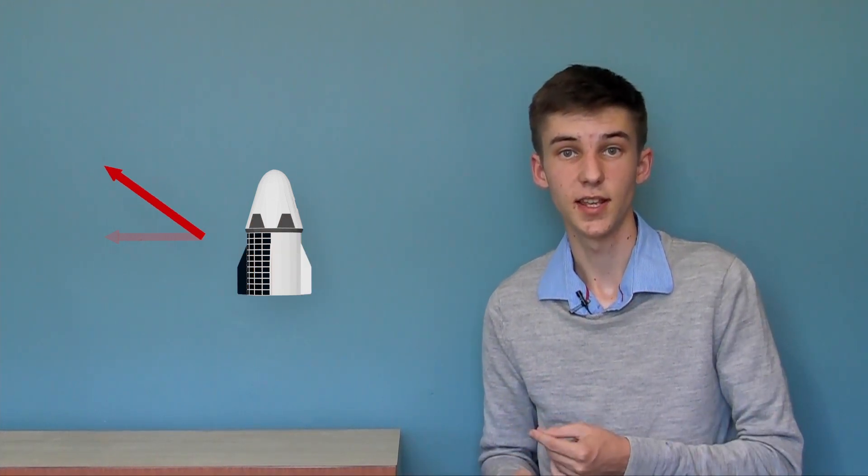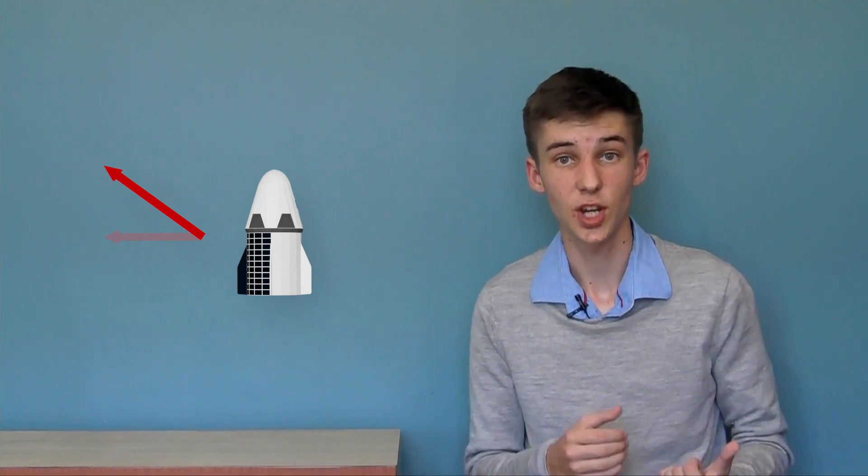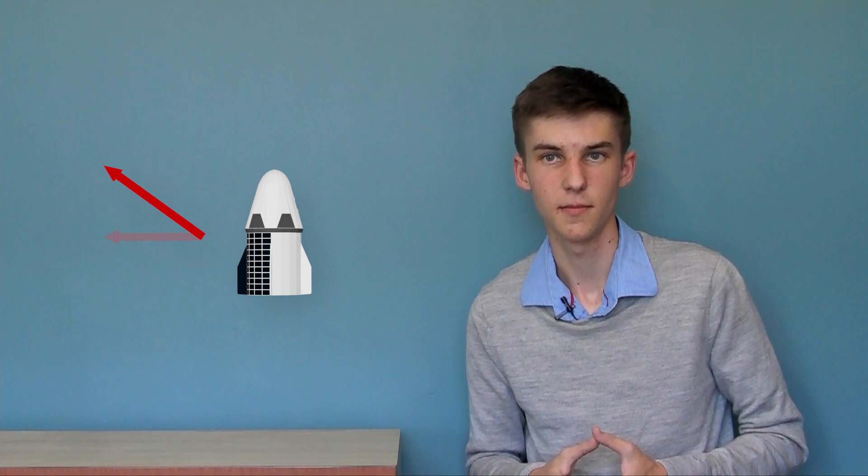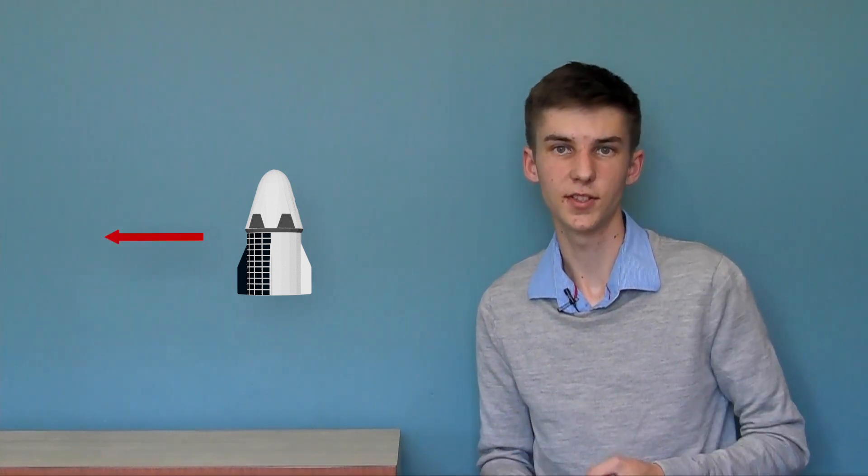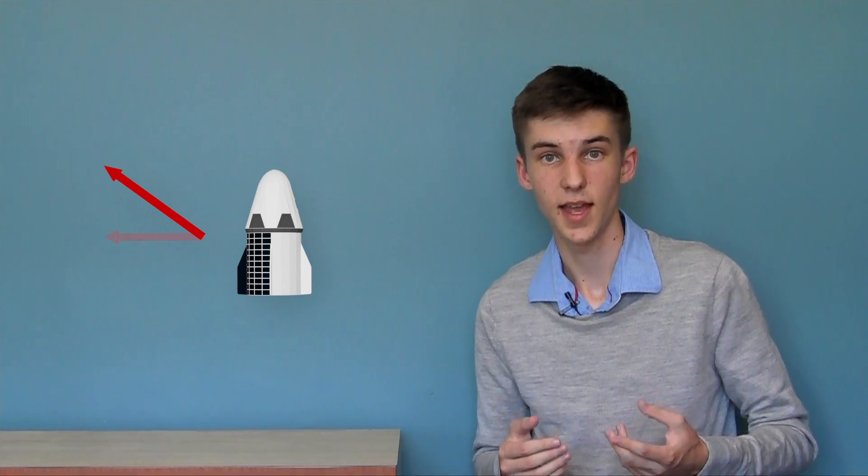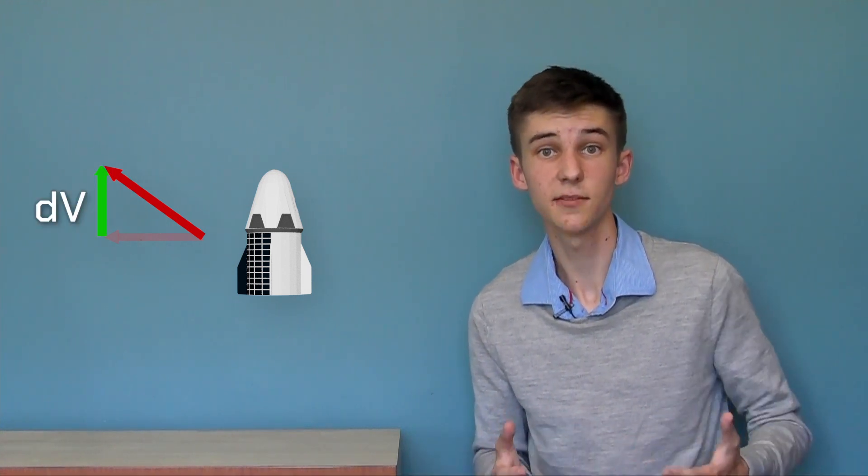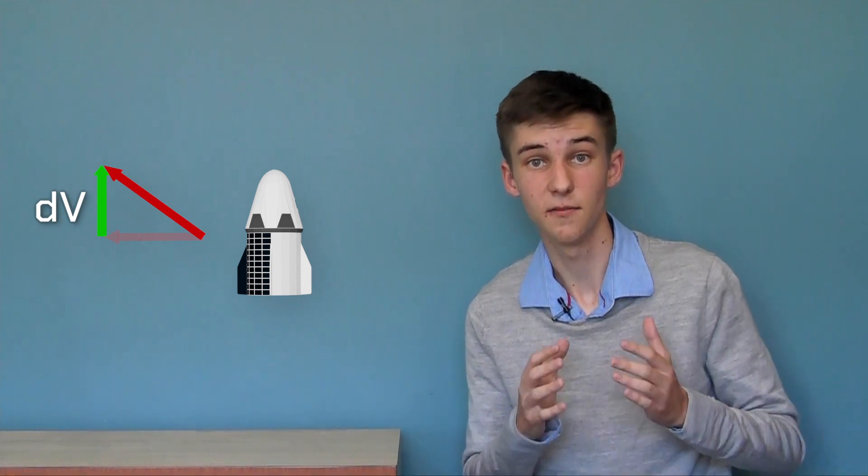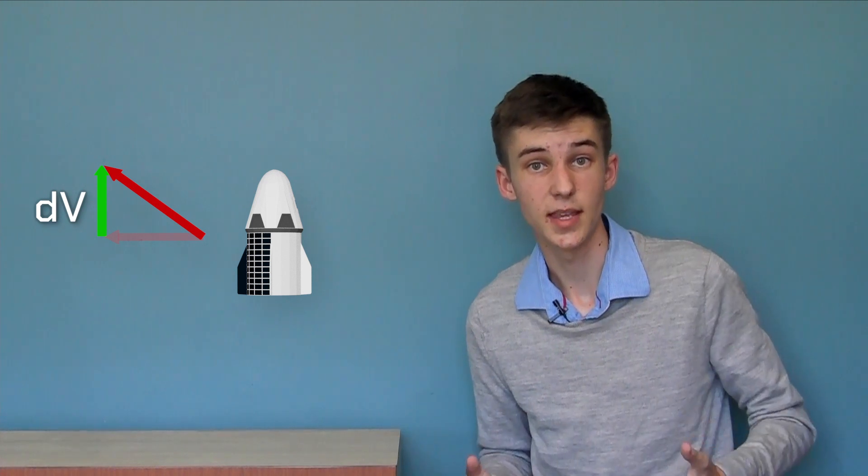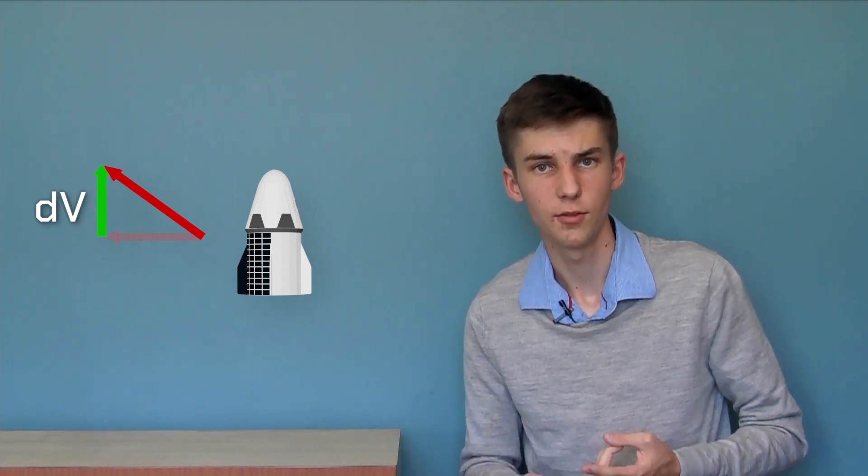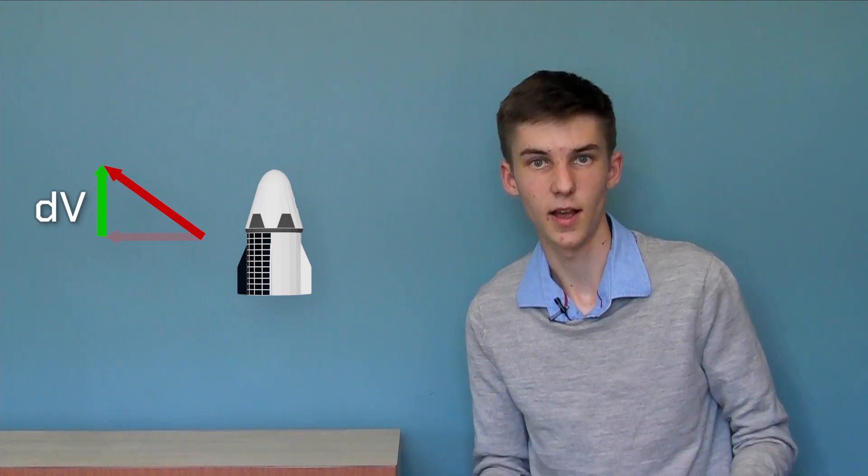The size of a change in our velocity is measured as delta V, where delta means change and V is short for velocity. We can see our starting velocity here and our finishing velocity here after our rocket burn, and we can connect those two, which gives us this arrow. The size of that arrow is our delta V for that maneuver. Delta V could be measured in kilometers per hour or miles per hour, but we use meters per second in the spaceflight world.